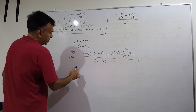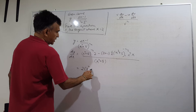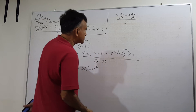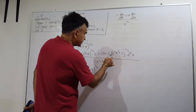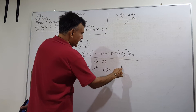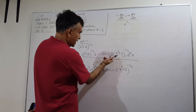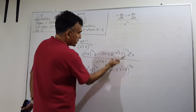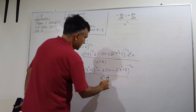Now let's clean that up a bit so it's nicer to look at and easier to plug in numbers. We have 2 times (x squared plus 5) to the power of 1/2. We have a 2 and a half that cancel, leaving minus x times (2x minus 1) times (x squared plus 5) to the power of negative 1/2. This whole expression is over (x squared plus 5). We're done with the differentiation.